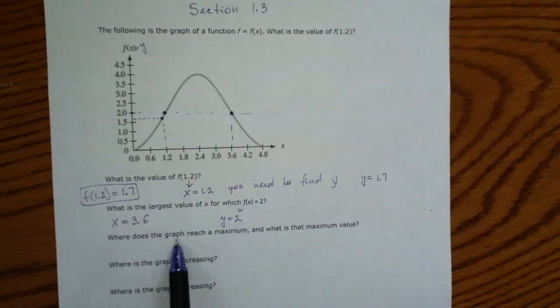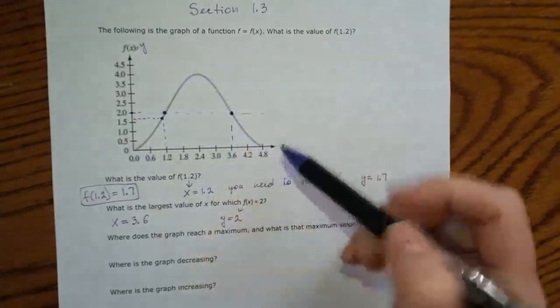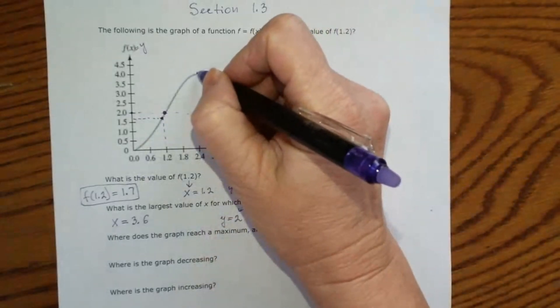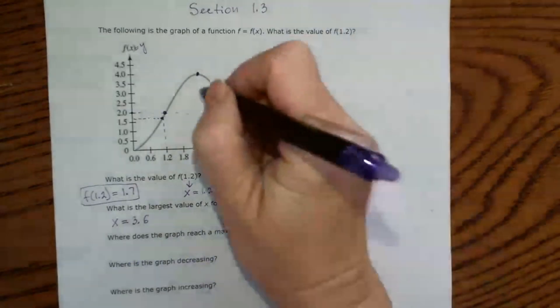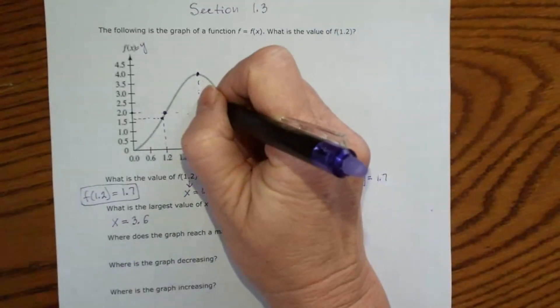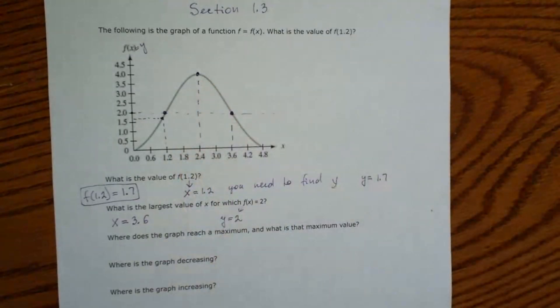Where does the graph reach a maximum? So if you look at the graph, the maximum point is the highest point. And they said where, so we're looking at the x-coordinate of this point that is 2.4. So x is equal to 2.4.